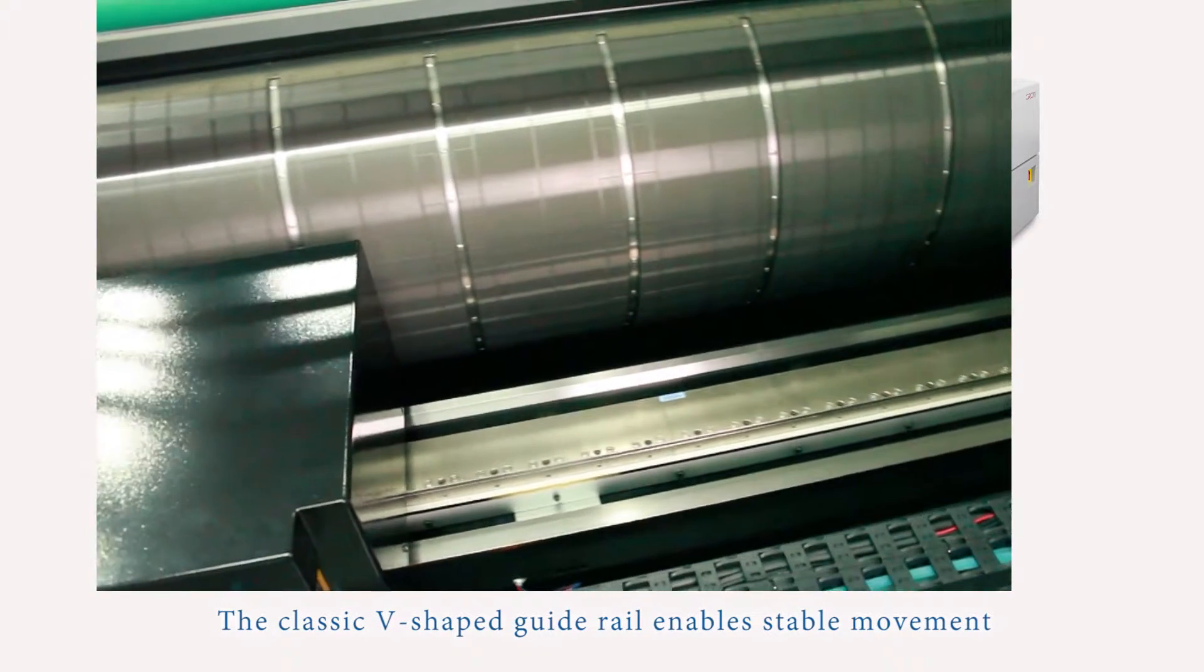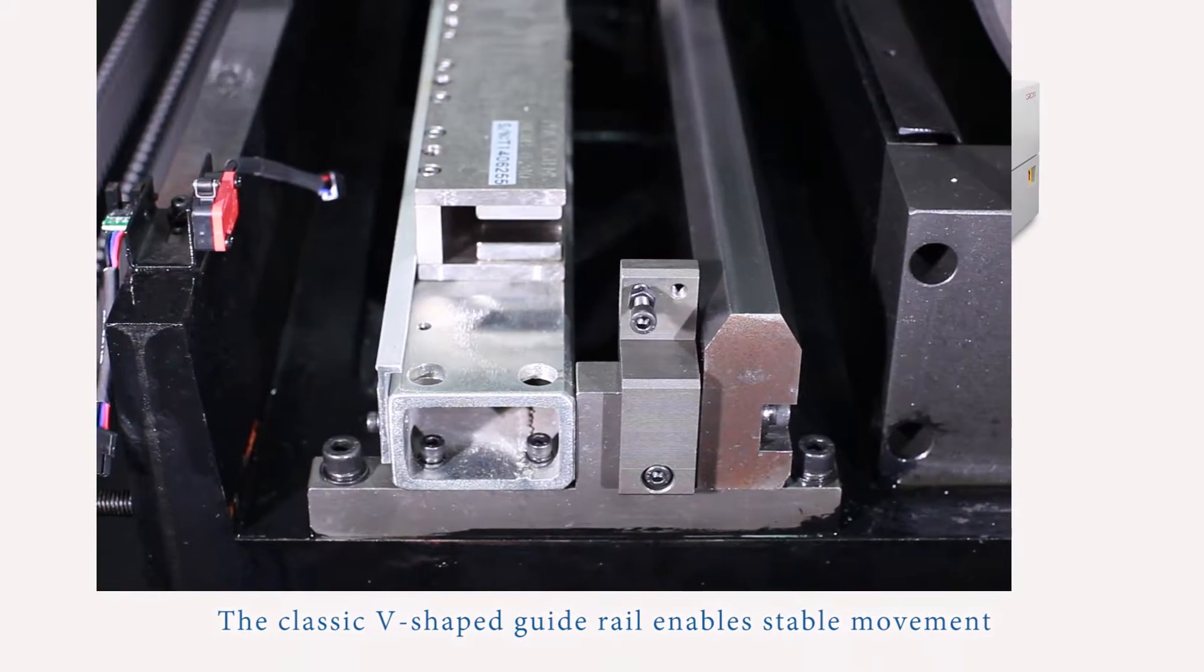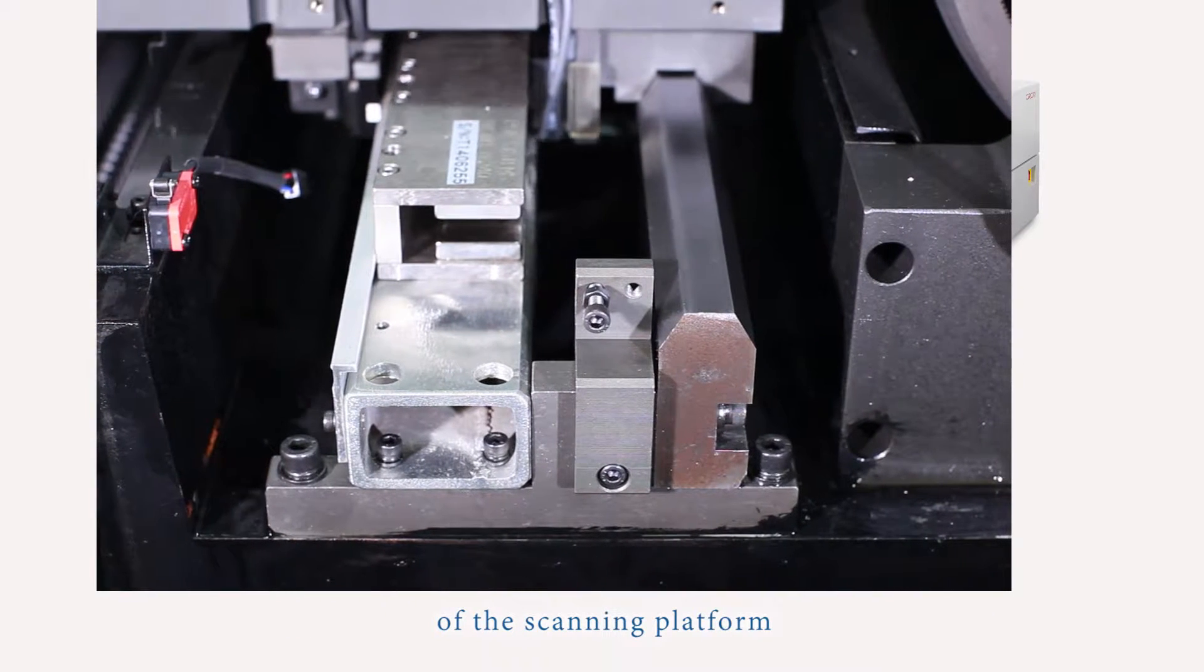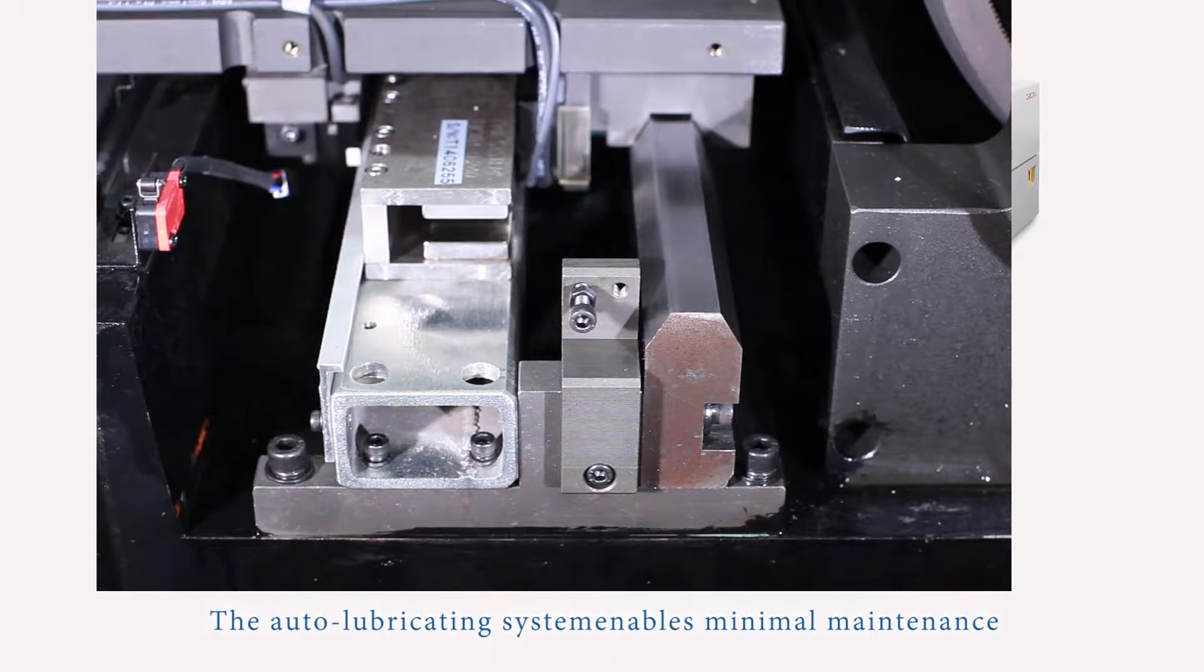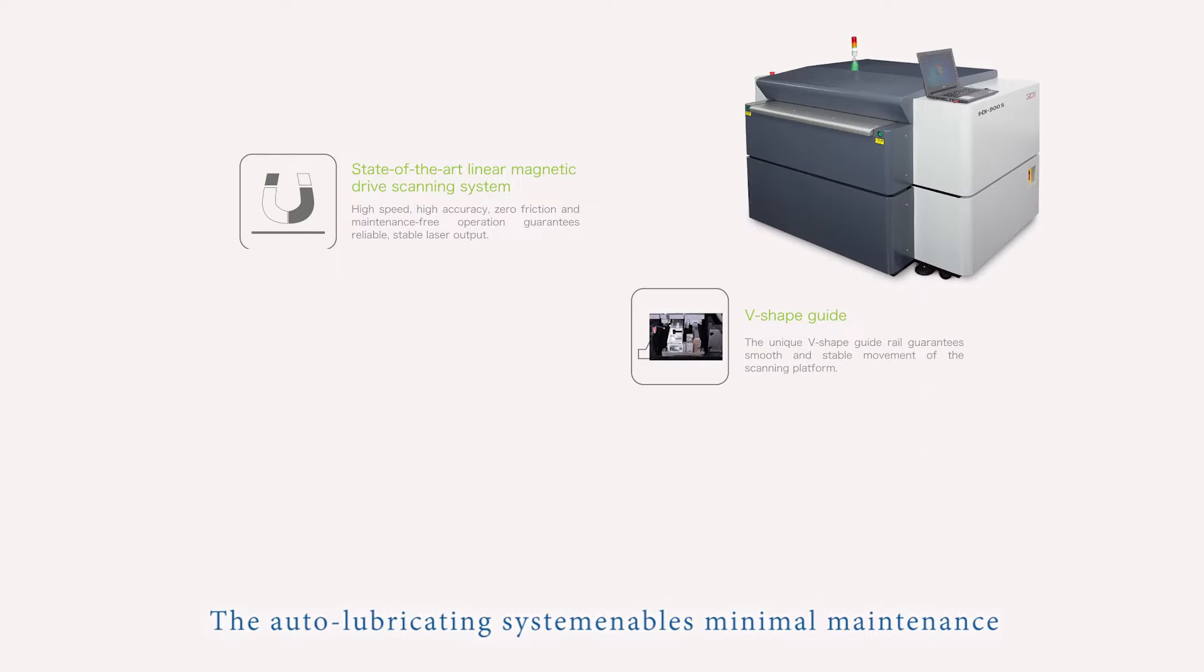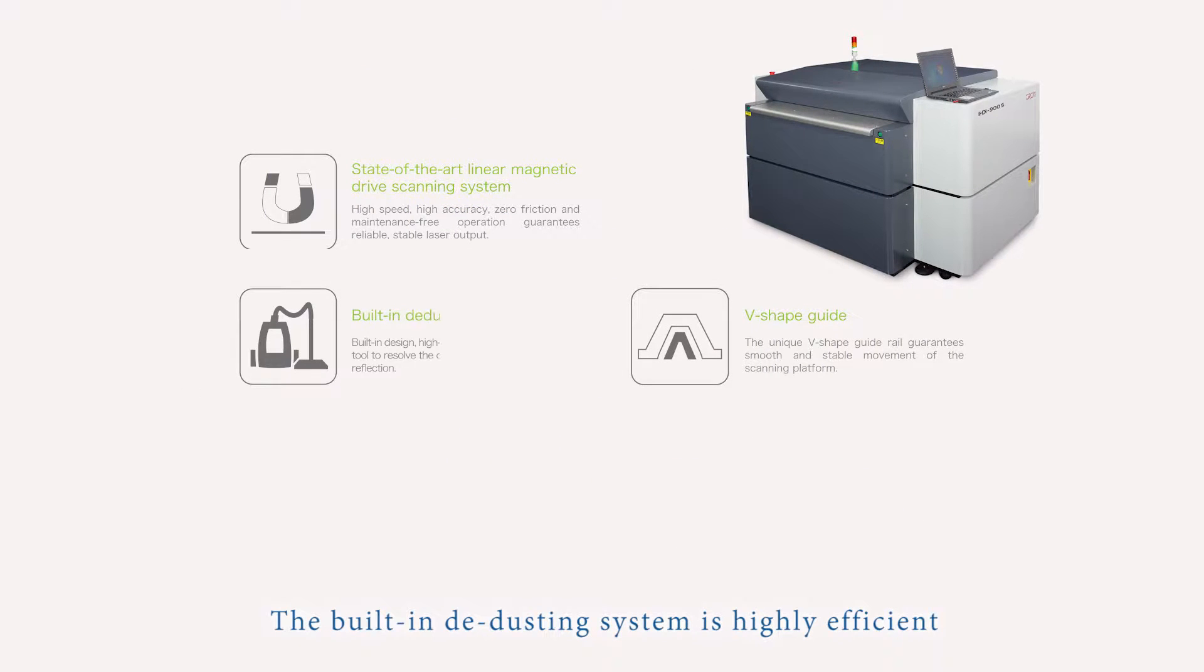The classic V-shaped guide rail enables stable movement of the scanning platform. The auto lubricating system enables minimal maintenance. The built-in de-dusting system is highly efficient in resolving the ablation issue which is the toughest challenge in flexo imaging.